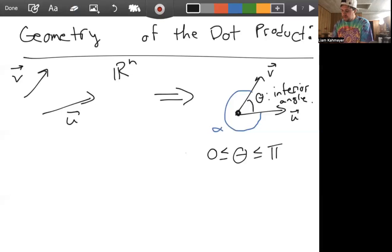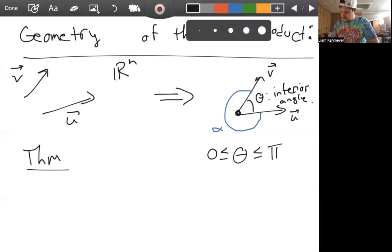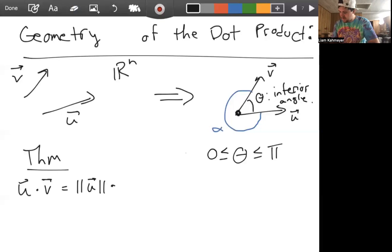We have a theorem that relates the dot product to this angle. The theorem says that the dot product U dot V is the same as the magnitude of U times the magnitude of V times cosine theta. And so this gives us a geometric understanding right away. Angles are very geometric, and we see here that the dot product can give us a description of this angle or the relationship radially between U and V.